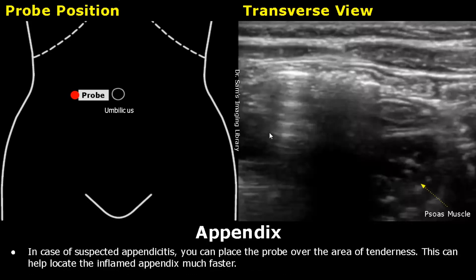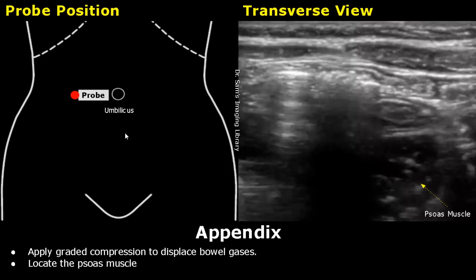In case of suspected appendicitis, place the probe over the area of tenderness. This helps in locating the appendix much faster. The patient can help you in placing the probe over the area of maximal tenderness, though this method is not always reliable. Next, apply graded compression to displace bowel gases.